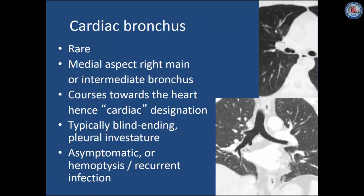A cardiac bronchus is a rare anomaly that arises from the medial aspect of the right main bronchus or the medial aspect of the bronchus intermedius. It generally courses towards the heart, hence the cardiac designation. These are typically blind-ending small bronchi, but occasionally will supply a small amount of lung with a pleural investiture. Most patients are asymptomatic, but occasionally patients will present with hemoptysis or recurrent infection. One can see on the axial image the medially located cardiac bronchus medial to the bronchus intermedius, and on the coronal image the same bronchus extending medially towards the heart.